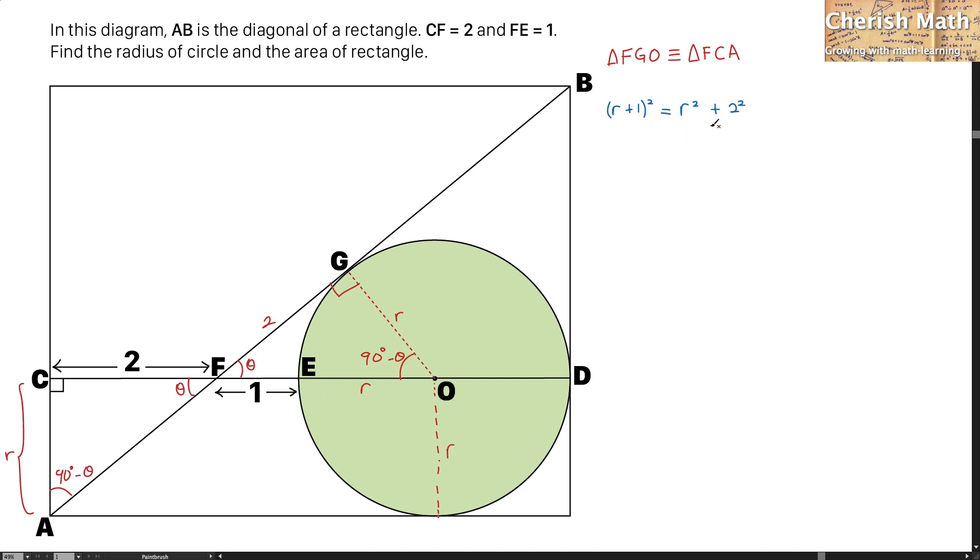So this is the first step of getting it and expand it. Rearrange the thing to get a value of R which is at 1.5.